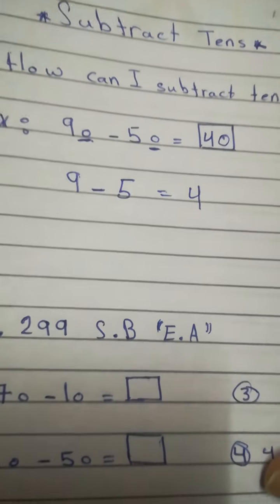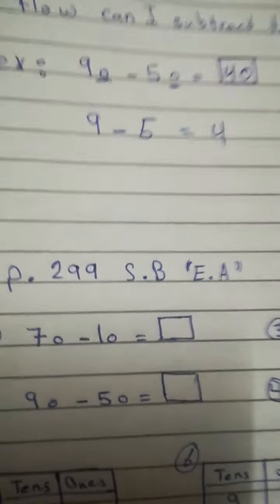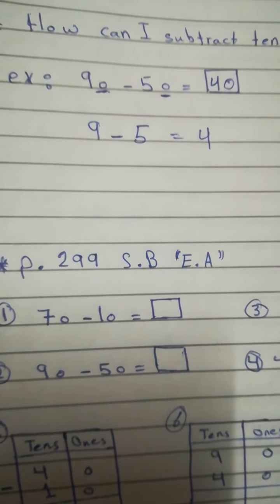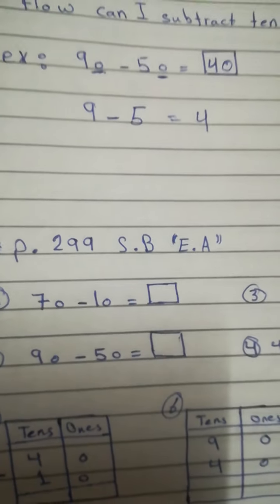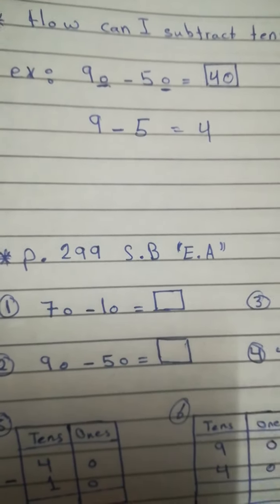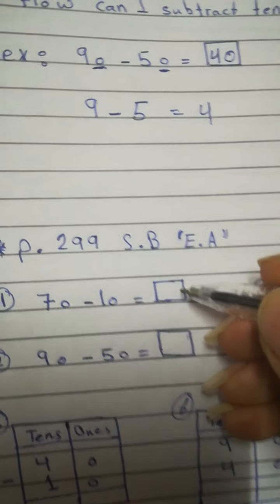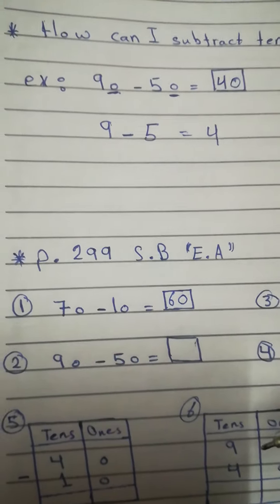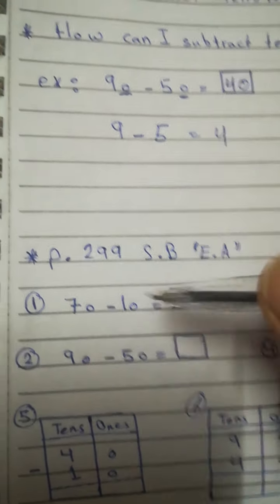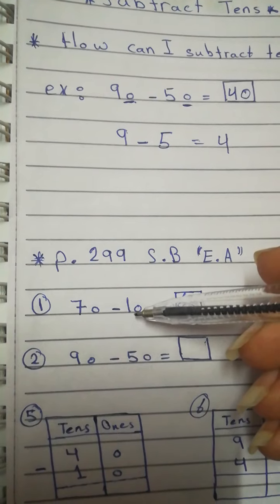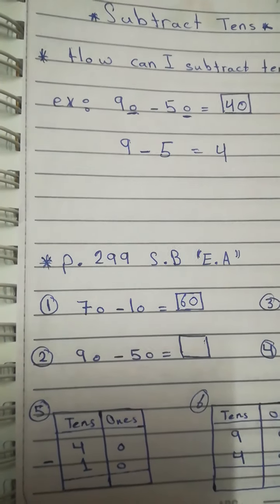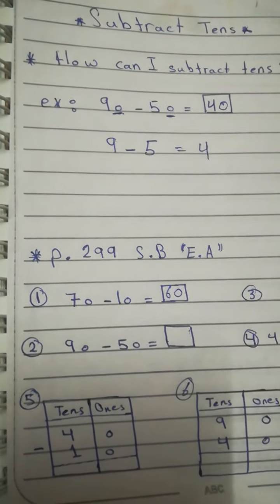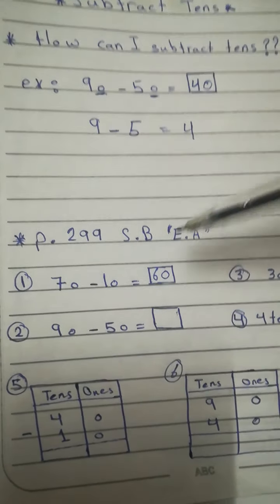Now, please go with me to your student book, page 299, number 1. Subtract. We have to subtract, right? 1. 70 minus 10. 0 minus 0 is 0. 7 minus 1 is 6. So, what's the answer? 60. 70 minus 10, it means you have to take away 10 from 70. You have 70 and take 10 away. How many are left? 60.